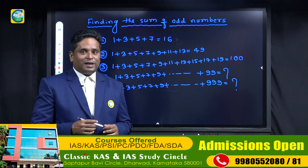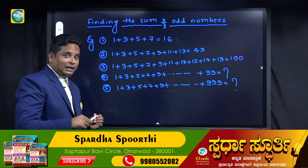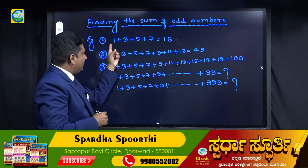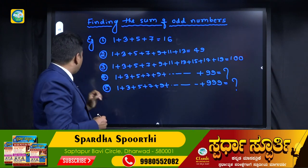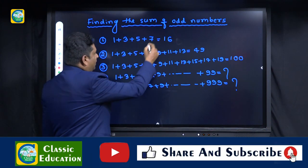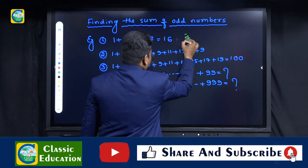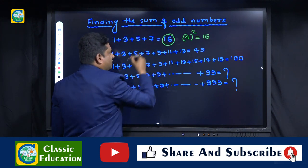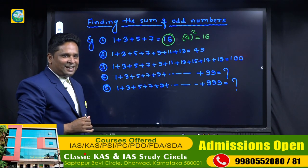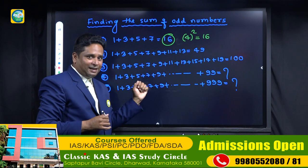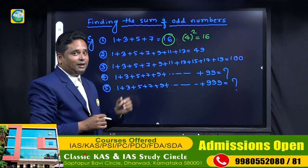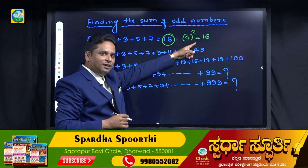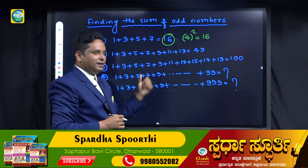Now I will show you the trick. Here in example 1 we have 4 numbers: 1, 3, 5, 7. Just square 4. Four squared is 16 — that is your answer. You have to count how many numbers there are and just square that number. Directly you will get the sum.